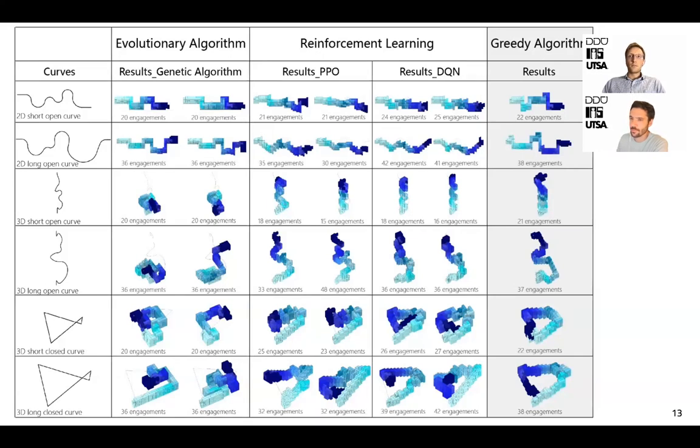The evolutionary algorithm can handle 2D curves well, but it fails on open and closed 3D curves. The reinforcement learning algorithms were able to solve both 2D and open 3D curves, matching the performance of the greedy algorithm.